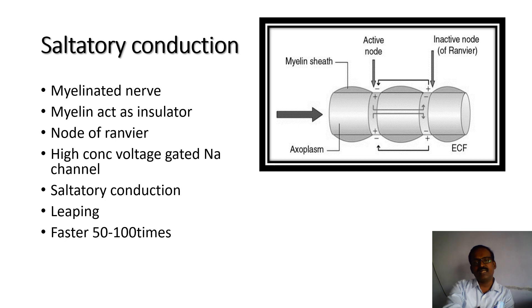The saltatory conduction is very much faster than in unmyelinated nerve fibers — 50 to 100 times faster than the non-myelinated nerve fibers.